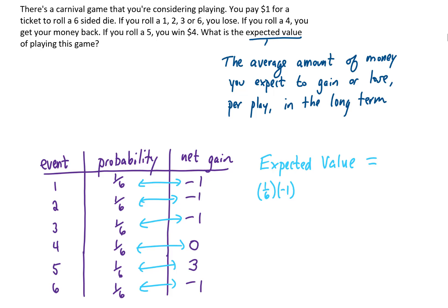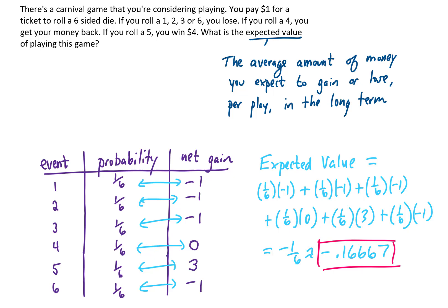If we do this, we get negative 1 sixth, or we can get a decimal of negative .16667. That is the expected value of playing this game.